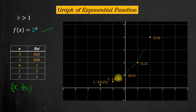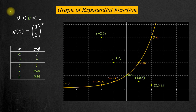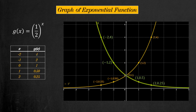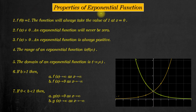When you connect those points, you get the curve for f(x) = 2^x. Now let's draw the graph where b is greater than zero but less than one. For example, take b = 1/2, defining g(x) = (1/2)^x. We take different values of x and find corresponding g(x) values. When plotted on the coordinate axis, we get the green-colored points and connecting them gives the green curve.